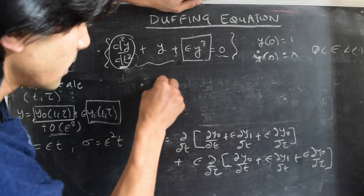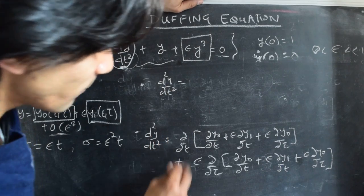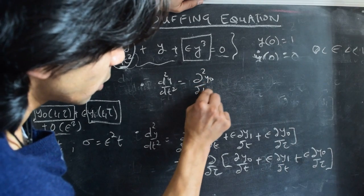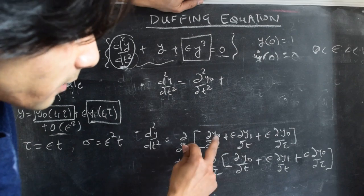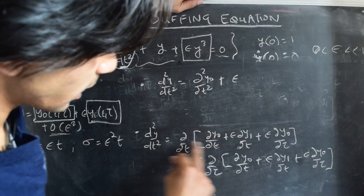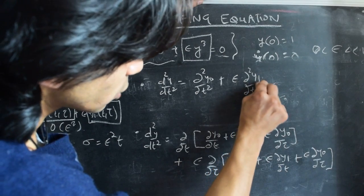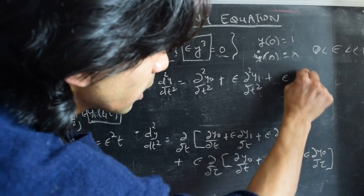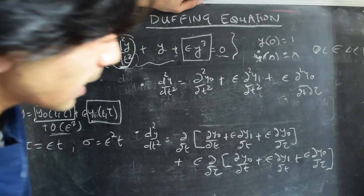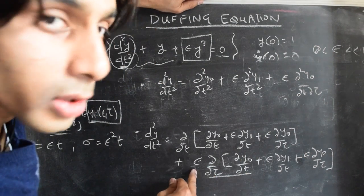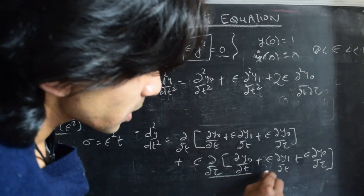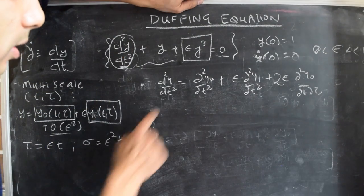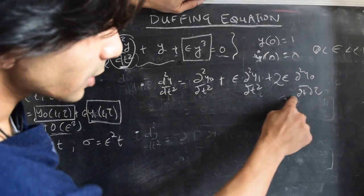Simplifying, d²y/dt² involves: d²y0/dt² at zeroth order, then at order ε we get d²y1/dt² plus a mixed derivative term 2·(d²y0/dt dτ). Terms of order ε² and higher are ignored. So the second derivative d²y/dt² has this as our expansion.